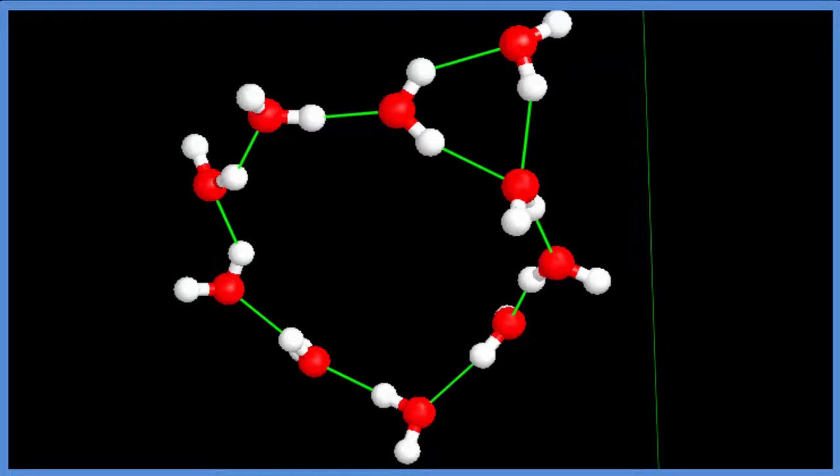Let's draw some hydrogen bonds in. The green lines are the hydrogen bonds between atoms. They're not very strong, but they're strong enough to influence the properties of water.